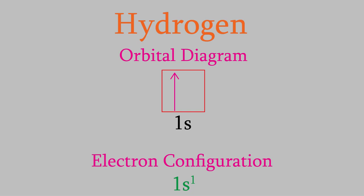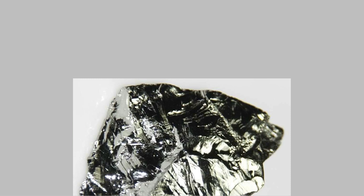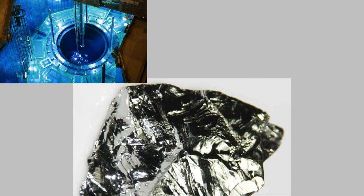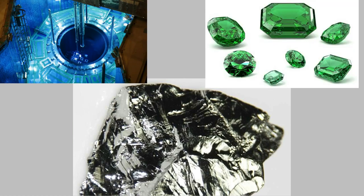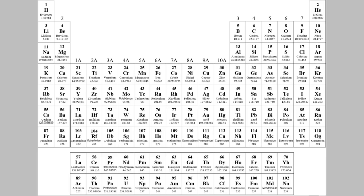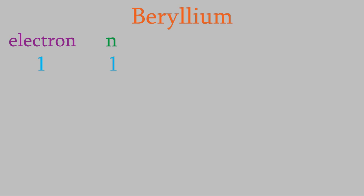Now let's try drawing an orbital diagram and electron configuration for a larger atom — beryllium. You may not know much about beryllium, but it's important in nuclear reactors and superconductors, and it gives the beautiful green color we see in emerald crystals. Beryllium has four electrons. Just as with hydrogen, the first electron wants the lowest energy possible, so it goes in the n=1 shell, l=0 orbital — a 1s orbital — with m=0. The second electron also has n=1, l=0, and is also in the 1s orbital with m=0.